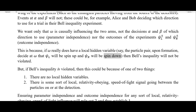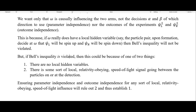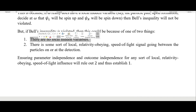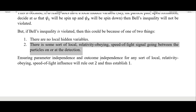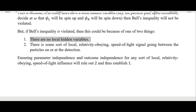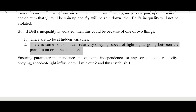But if Bell's inequality is violated, this could be because of one of two things: one, there are no local hidden variables; or two, there is some sort of local relativity-obeying speed-of-light signal going between particles at or near detection. When I say there is a caveat to these Bell experiments, this is what I mean. Number one is the largely agreed-upon interpretation, but trying to rule out number two is the direction these experiments have taken since the first ones back in 1982.